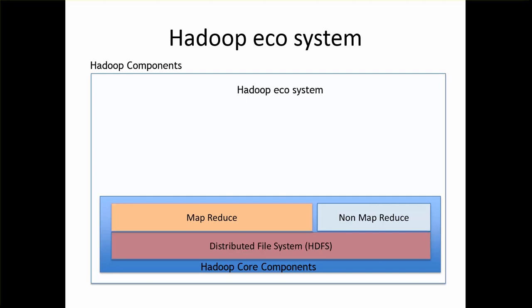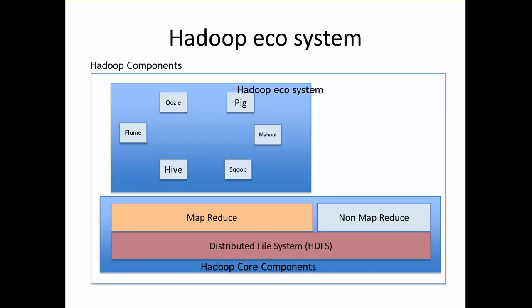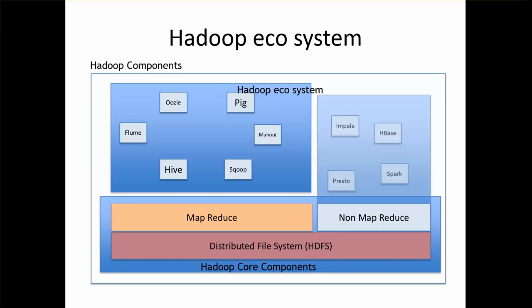For MapReduce-based technology, you have Hive, Sqoop, Pig, Mahout, Oozie, Flume, etc. For non-MapReduce based, you have technologies like Impala, HBase, Spark, and Presto.